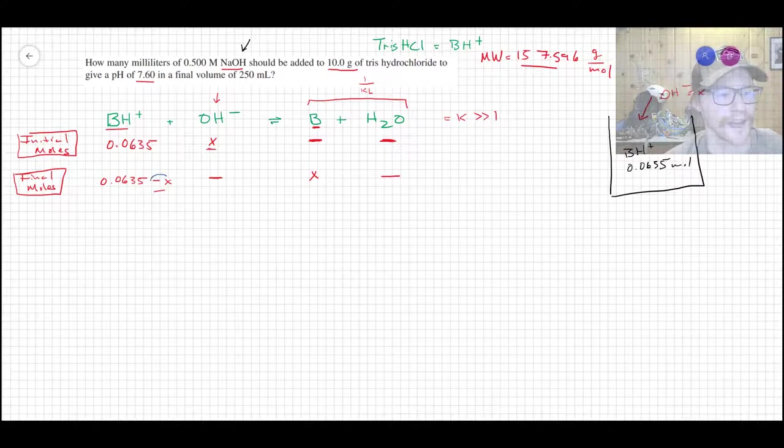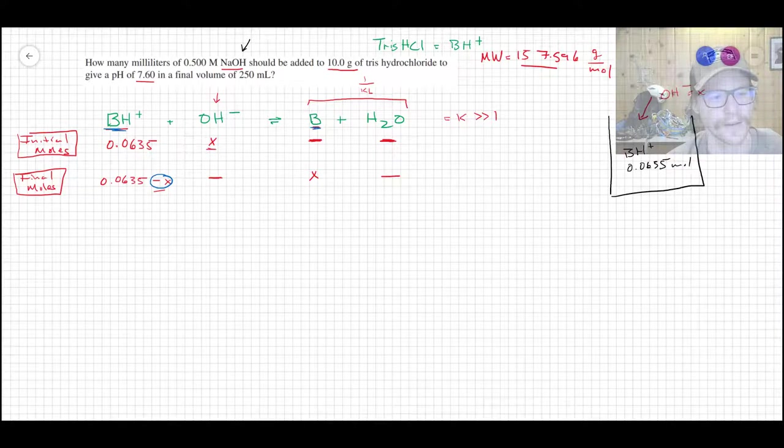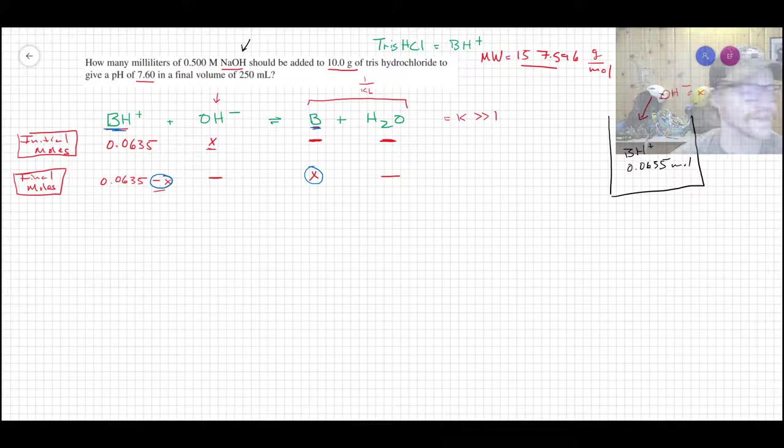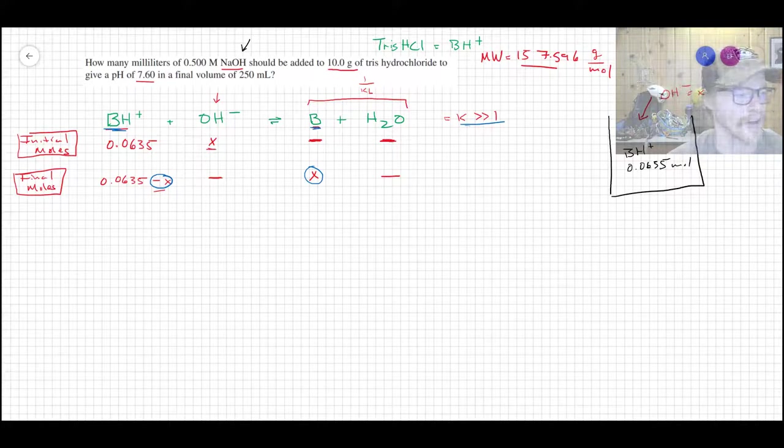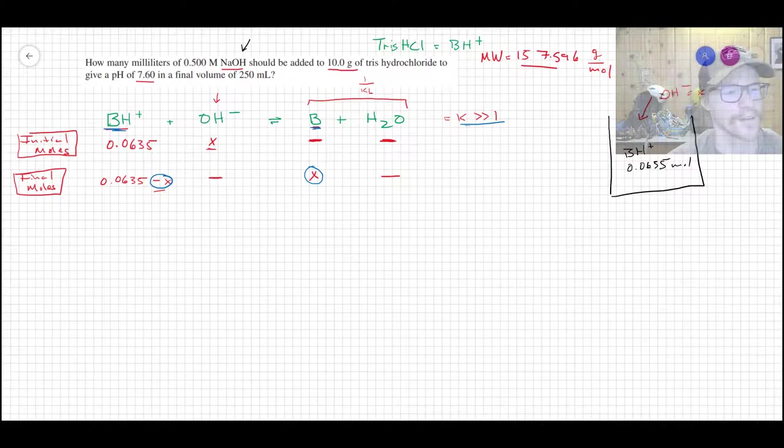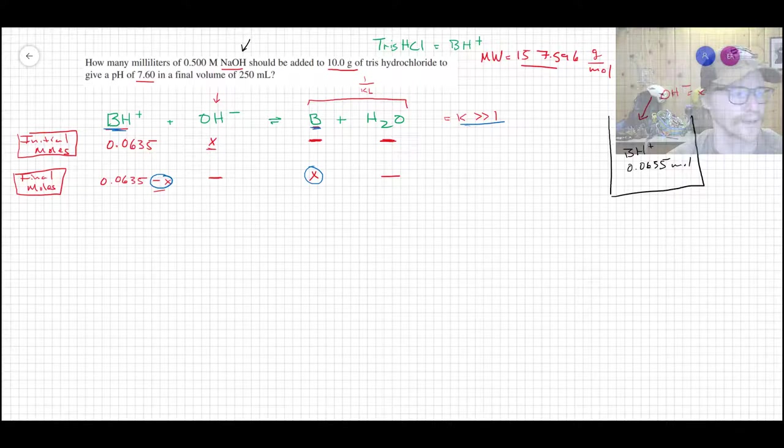So we subtract that X, all of the X goes away because it all reacts with BH+. So we're back to zero at equilibrium or not really zero, but whatever is left just simply from the dissociation of water. And that X that we added here goes to create the B. So it's the same X that we have here. So this is not really an ICE table. It's more of just an accounting table.